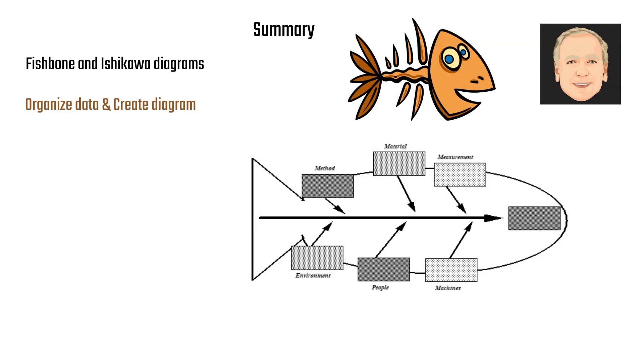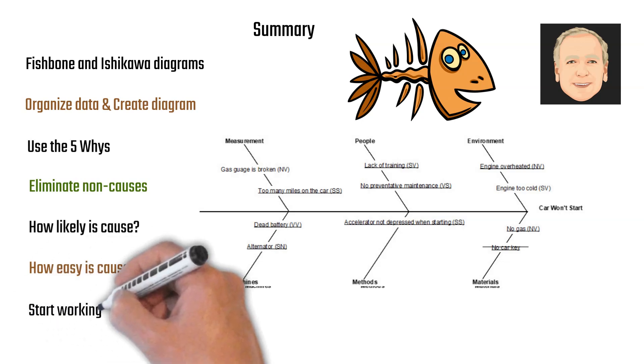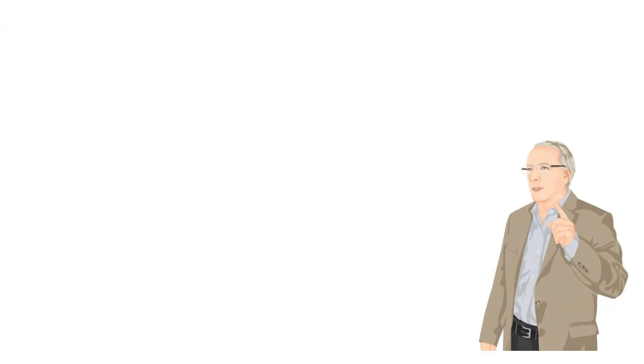So in summary, we've looked at fishbone and Ishikawa diagrams, or the cause and effect diagrams. Organize data in a systematic way. Use the five whys. Eliminate non-causes. How likely it is. How easy it is to verify. And you start working on the ones with VV.